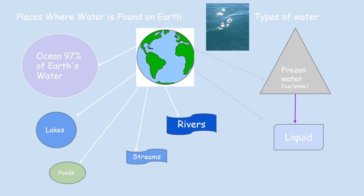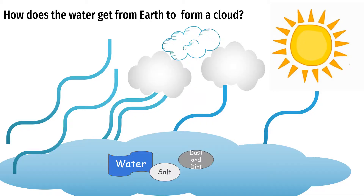Water also exists in the snowpack, like up in the mountains and in glaciers. Remember from our previous discussions that water can be in two forms: liquid or solid. Water is affected by the conditions on the earth. One of those conditions is the earth's temperature. When water warms, it converts to a vapor — vapor is just another word for gas.